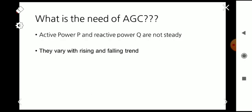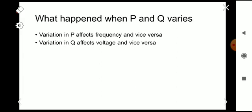Why are we using AGC? Because the active power P and reactive power Q are not steady — they are continuously changing. So we have to control the active power P and reactive power Q, and mainly for that we need the Automatic Generation Control.